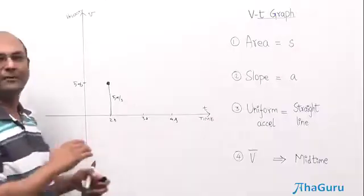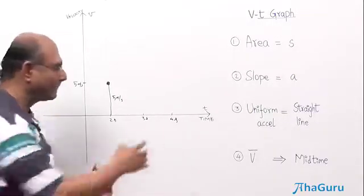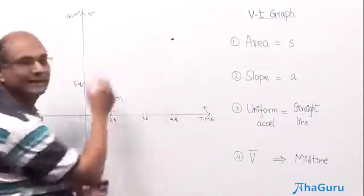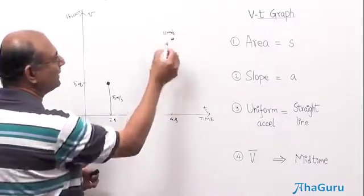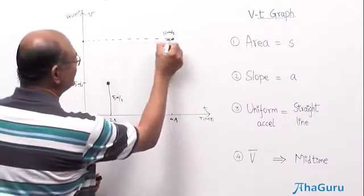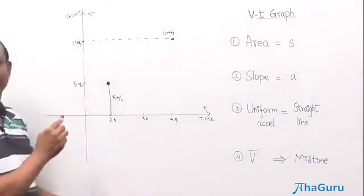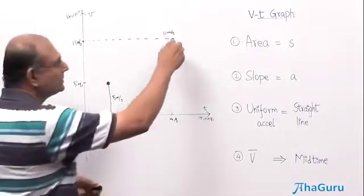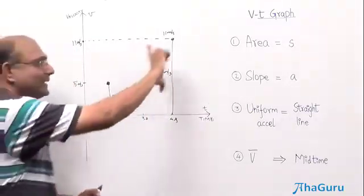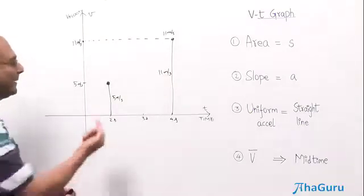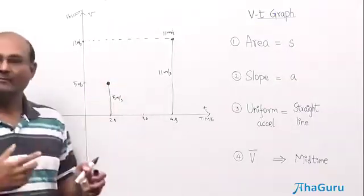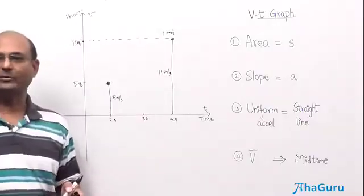Suppose I went from 5 meters per second to 11 meters per second at 4 seconds. So at 4 seconds, 11 meters per second is the height on the velocity axis. On the VT graph, this height represents the velocity. If you go up it is positive, if down it is negative. The length itself represents the magnitude of the velocity, which is the speed.